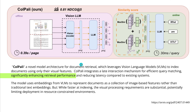A new model architecture for document retrieval which leverages the vision language model to index documents using only their visual features. So whatever you have — a graph, some visualization, some table, pure text — the system was trained to perform well on those data. Plus, it integrates a very clever late interaction mechanism for efficient query matching to enhance the retrieval performance of your RAG system.